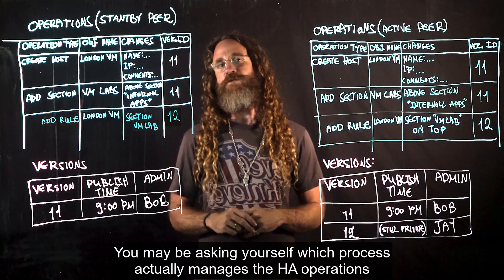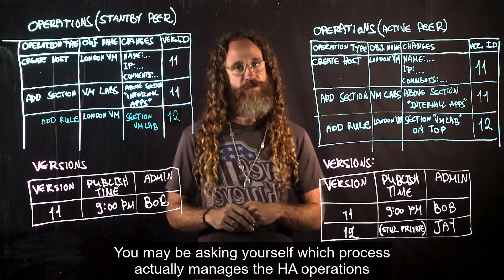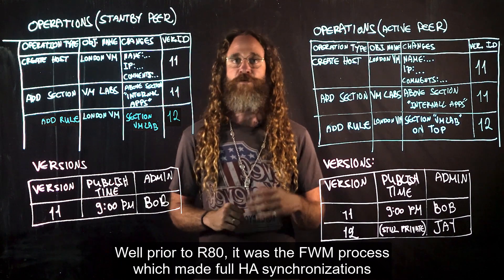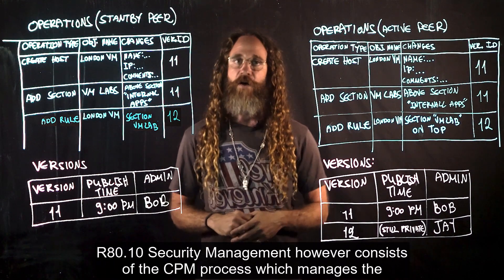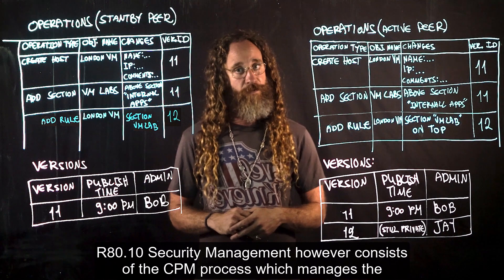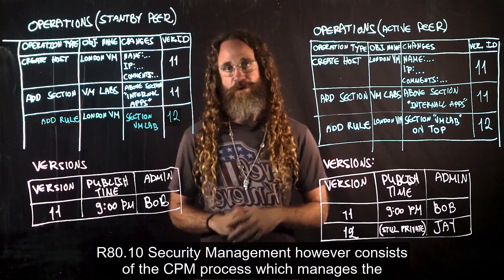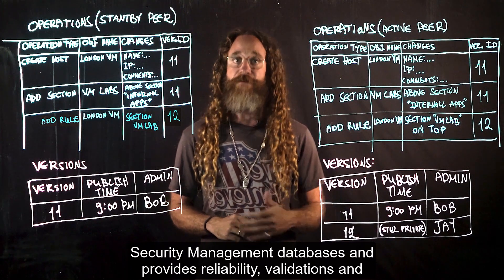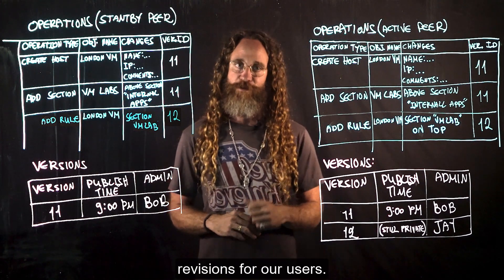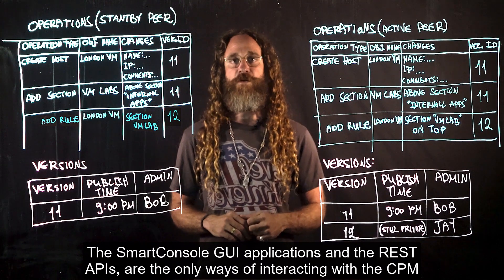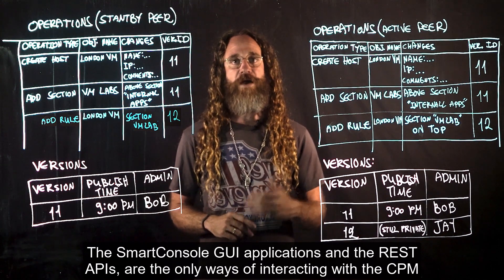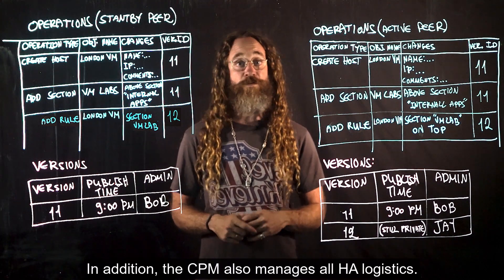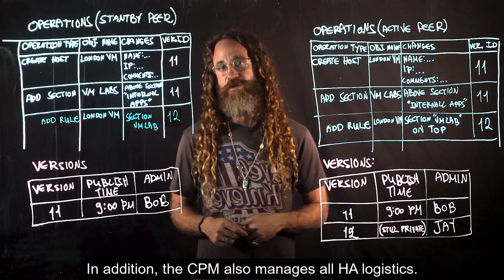Which process actually manages the HA operations? Prior to R80, it was the FWM process which made full HA synchronizations. R80.10 security management, however, consists of the CPM process, which manages the security management databases and provides reliability, validations, and revisions for users. The SmartConsole GUI applications and the REST APIs are the only ways of interacting with the CPM. In addition, the CPM also manages all HA logistics.